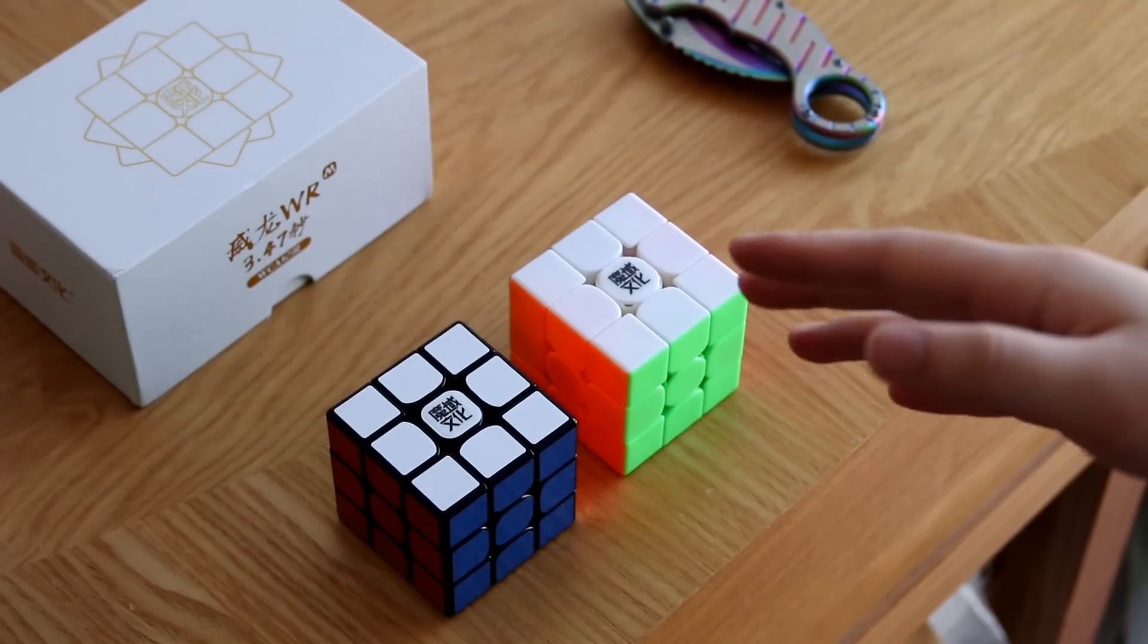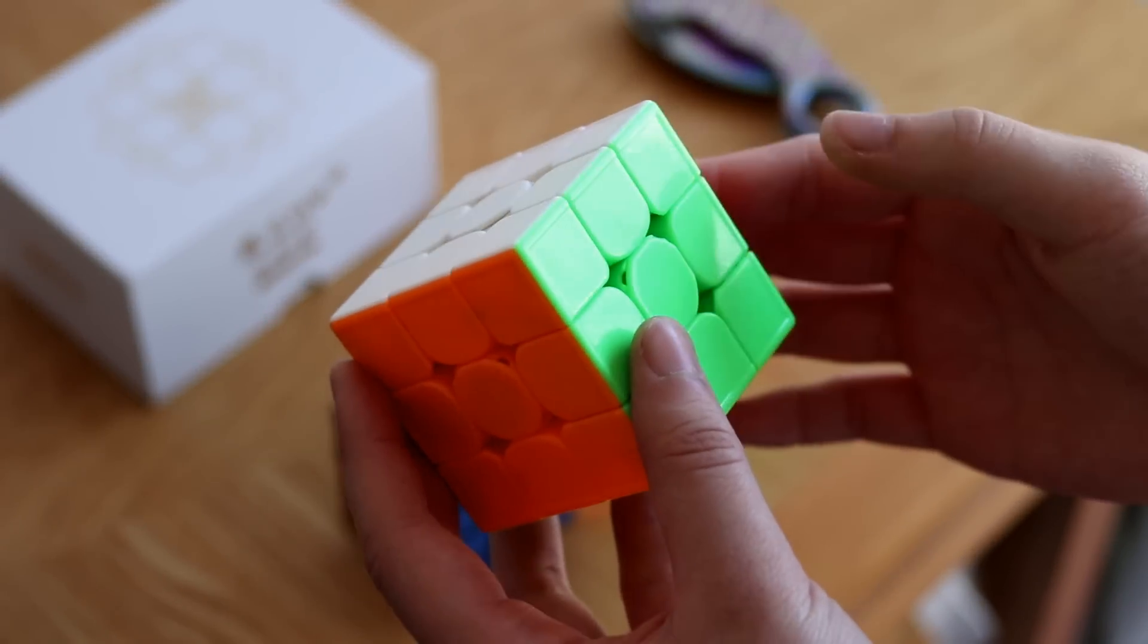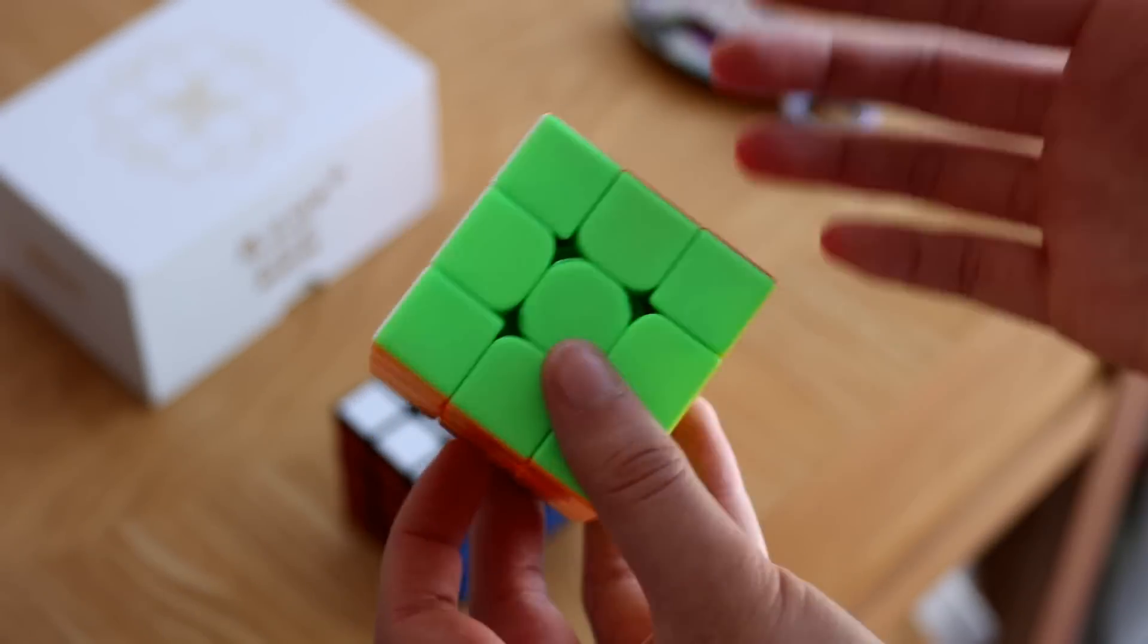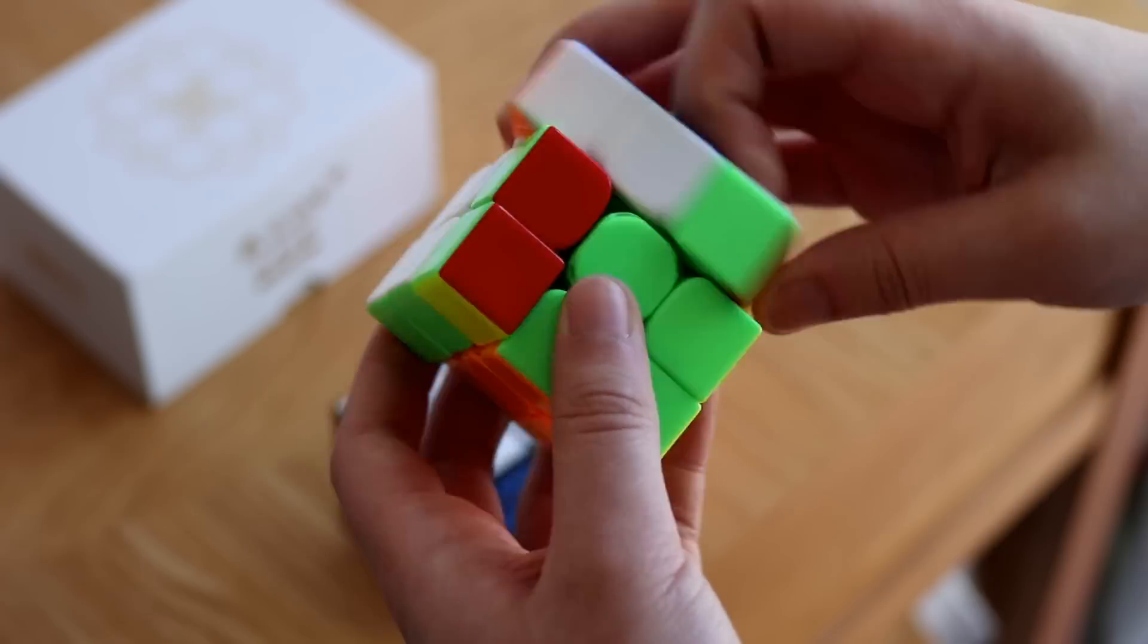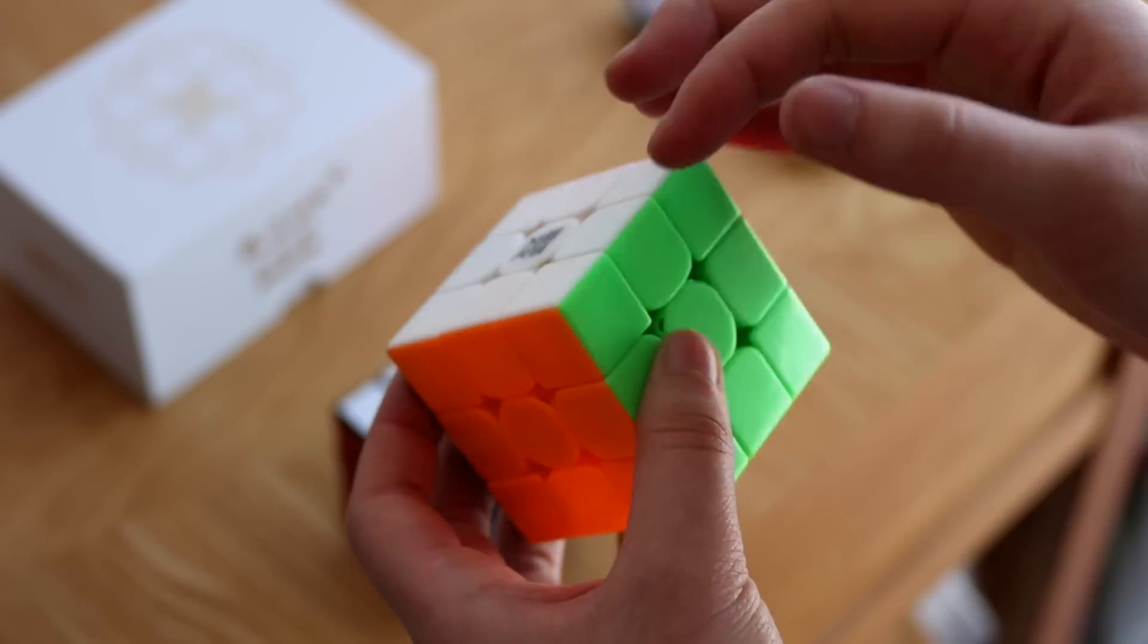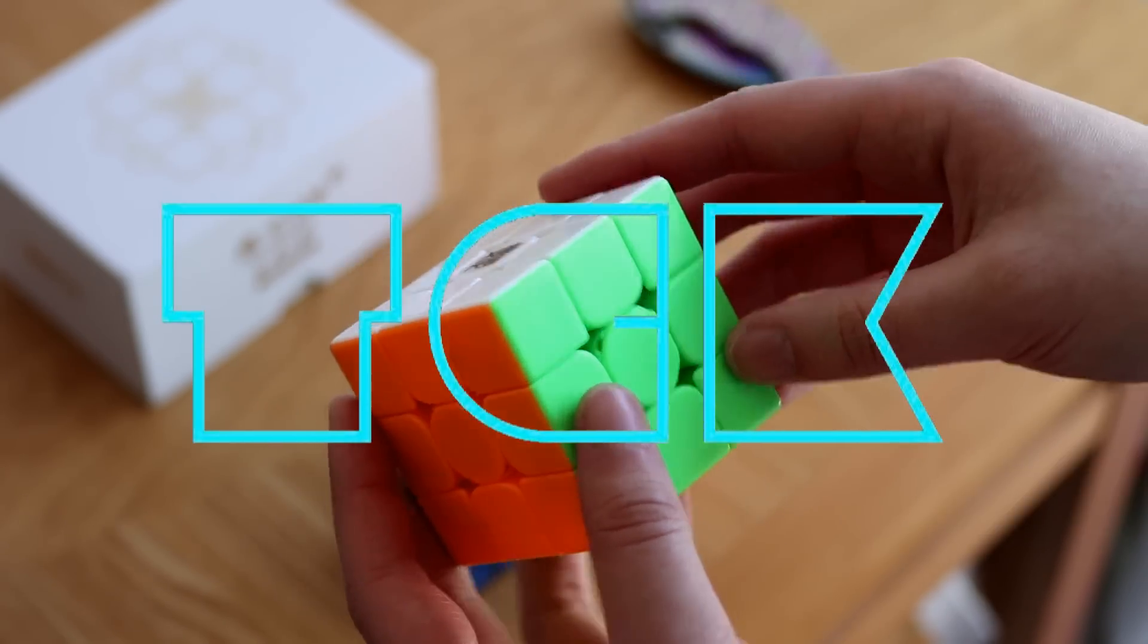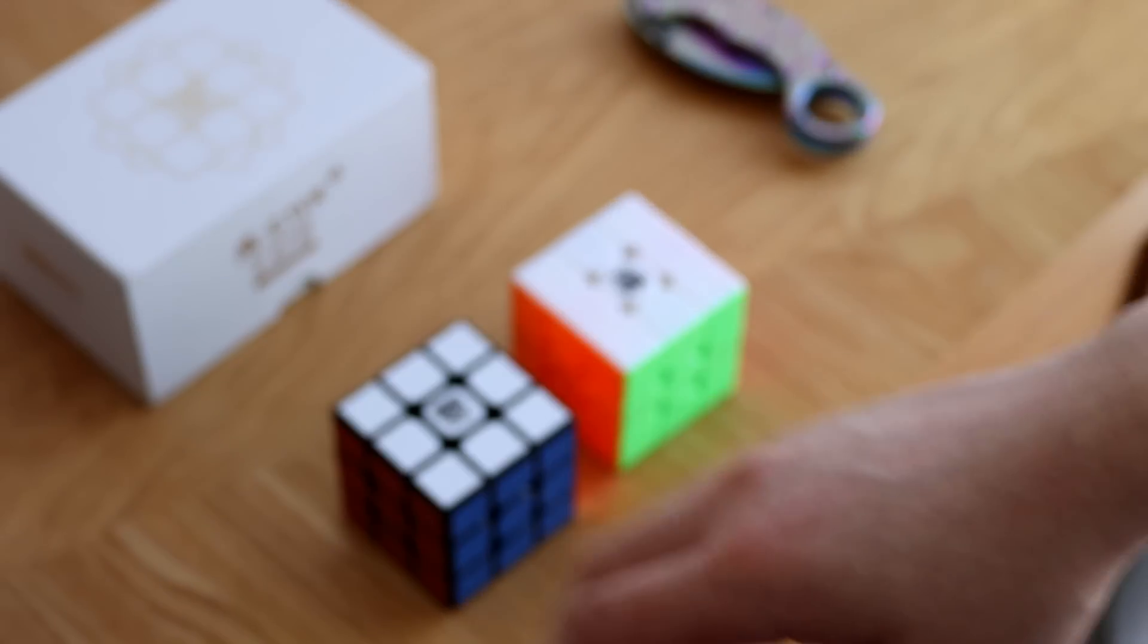Alright, so that's gonna do it for this unboxing. And so if you are like me and you just really didn't like the GTS3M, definitely go ahead and reconsider and give the WRM a shot. Even though the only major difference is that it doesn't have ridges, it definitely makes a huge difference in the feeling of the puzzle and just how you perceive the performance of the cube. So head over to the Bcube shop, check this puzzle out and definitely use code TCK for discounts on all your orders. But yeah, that is gonna do it for this video. I hope you guys did enjoy it and I'll see you guys in the next one.